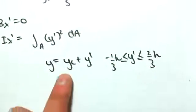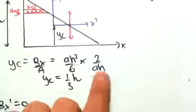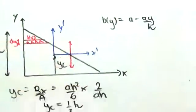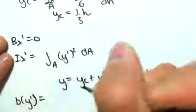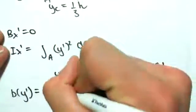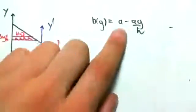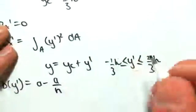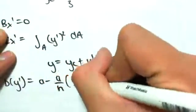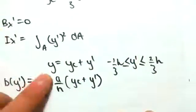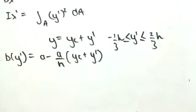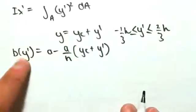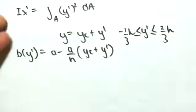So what I'm going to do now is substitute in for y into the equation we developed there. So we're going to write b of y dash equals a minus a on h, where y is the same as yc plus y dash. So I'm just substituting in y there. That's all I'm doing. But now, because it's in terms of y dash, our function is in terms of y dash.